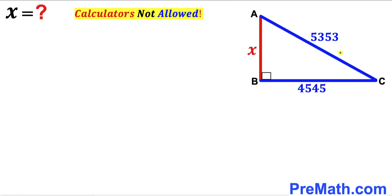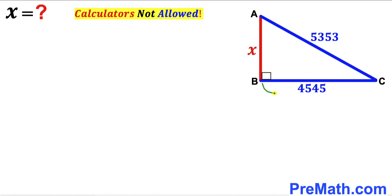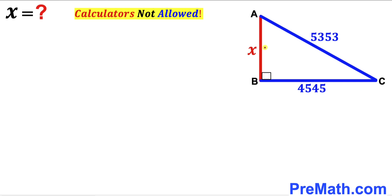Welcome to PreMath. In this video we have a right triangle ABC such that its hypotenuse AC is 5353 units, one of its legs BC is 4545 units, and this other leg AB is represented by x. Our task is to find the value of x.